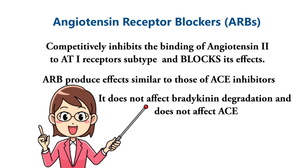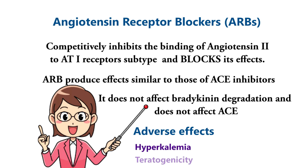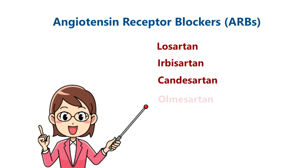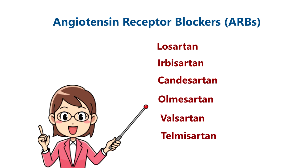Unlike ACE inhibitors, ARBs do not affect ACE itself. Adverse effects include hyperkalemia and teratogenicity. Examples of Angiotensin Receptor Blockers include Losartan, Irbesartan, Candesartan, Olmesartan, Valsartan, and Telmisartan.